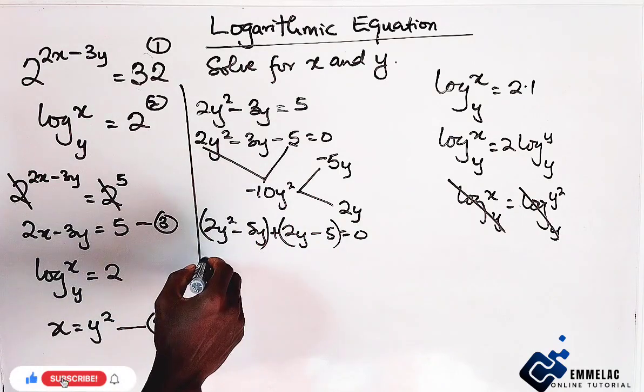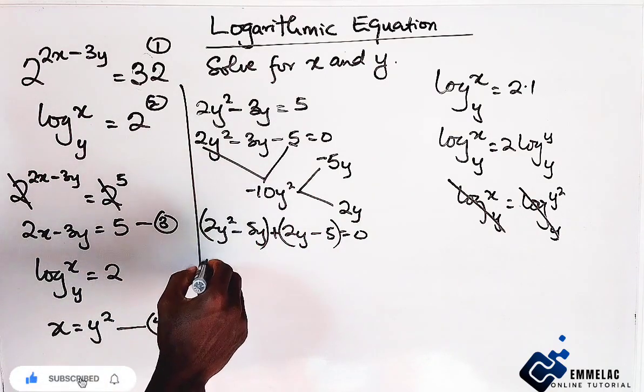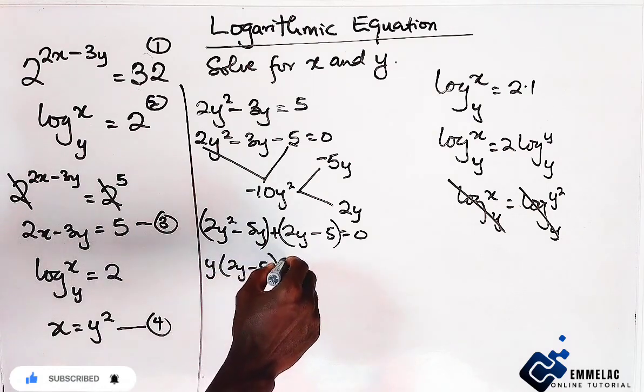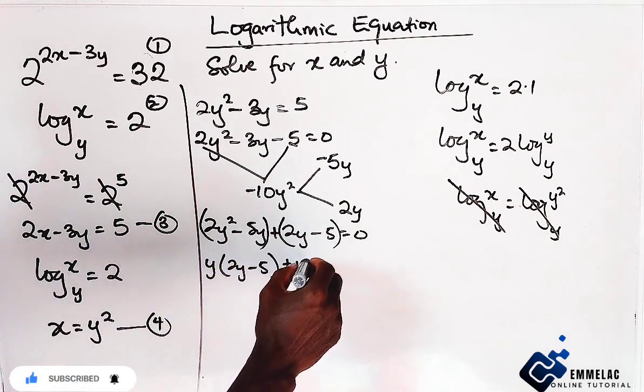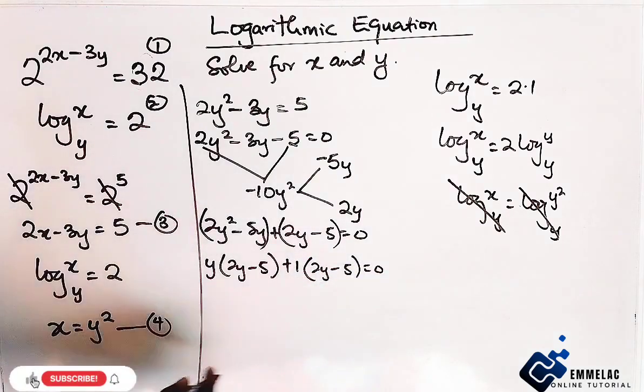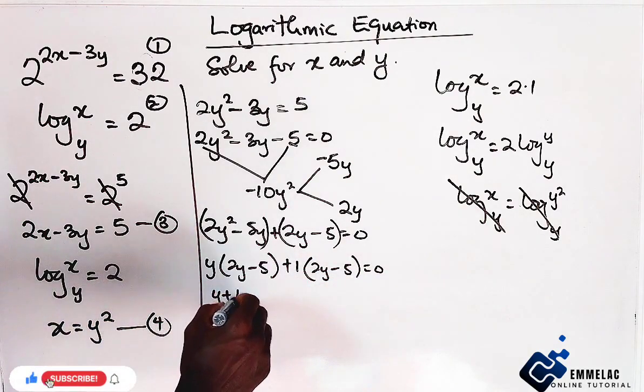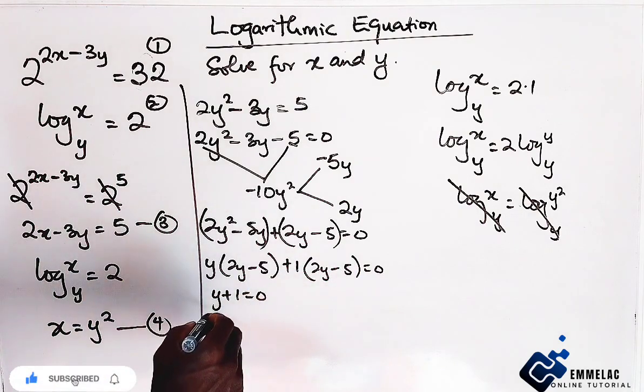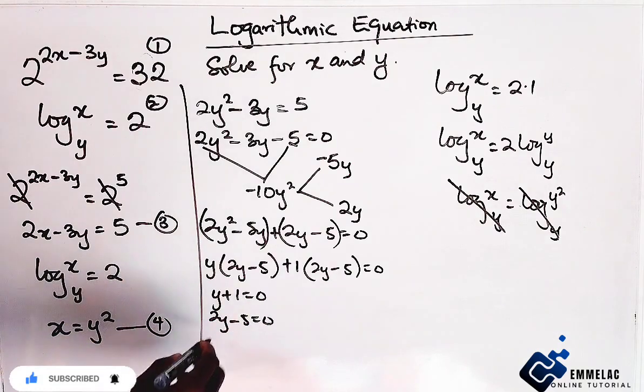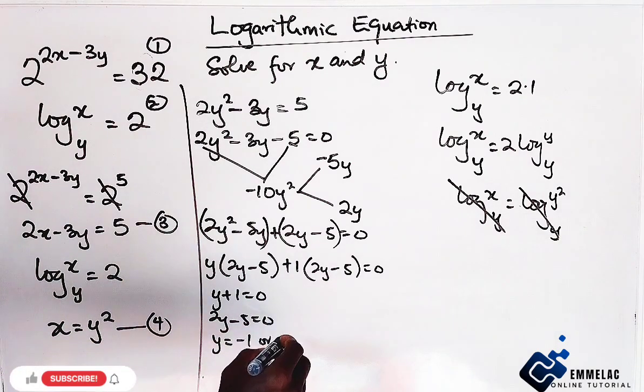Now, you factor out. So here we have factor out y. We have 2y minus 5, then plus 1 is factor there. You have 2y minus 5. So we have y plus 1 equals to 0 and 2y minus 5 equals to 0. So, in this case, we can say that y equals to negative 1 or 5 over 2.